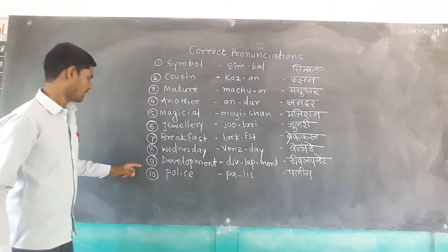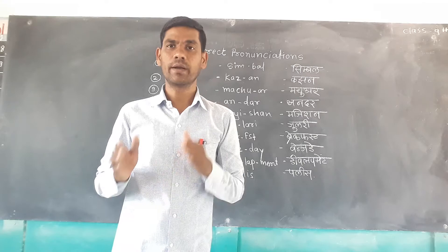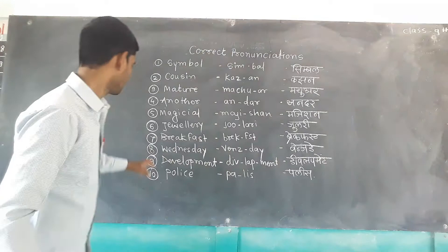Number nine is 'development.' The correct pronunciation is 'development,' not 'development.' 'Dev-el-op-ment' — 'development' is the correct pronunciation.